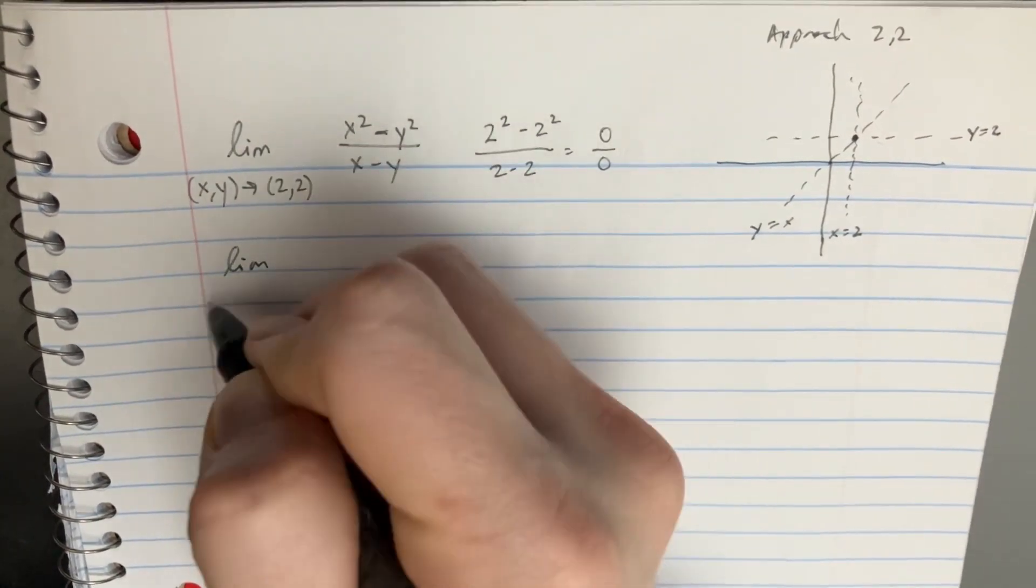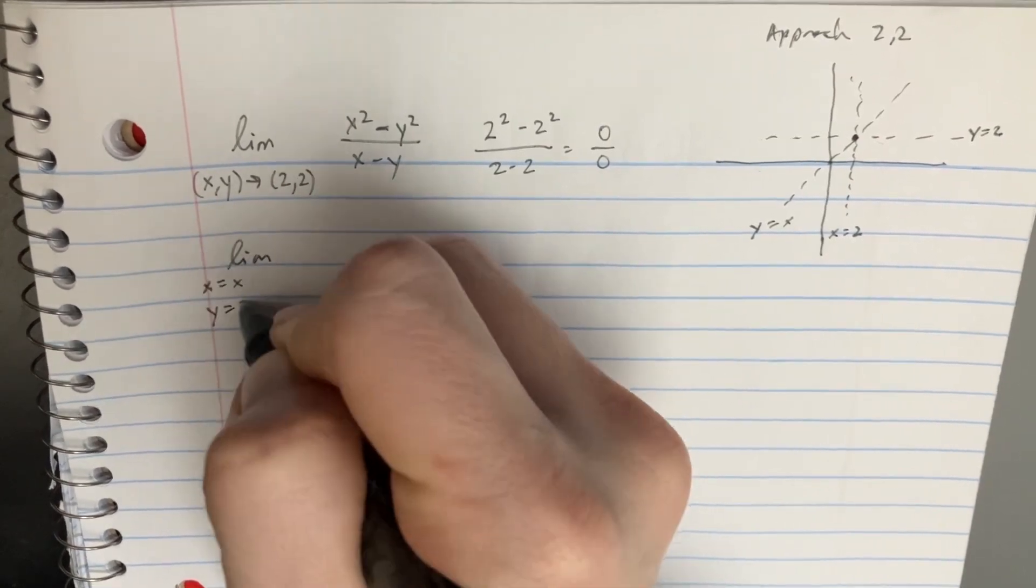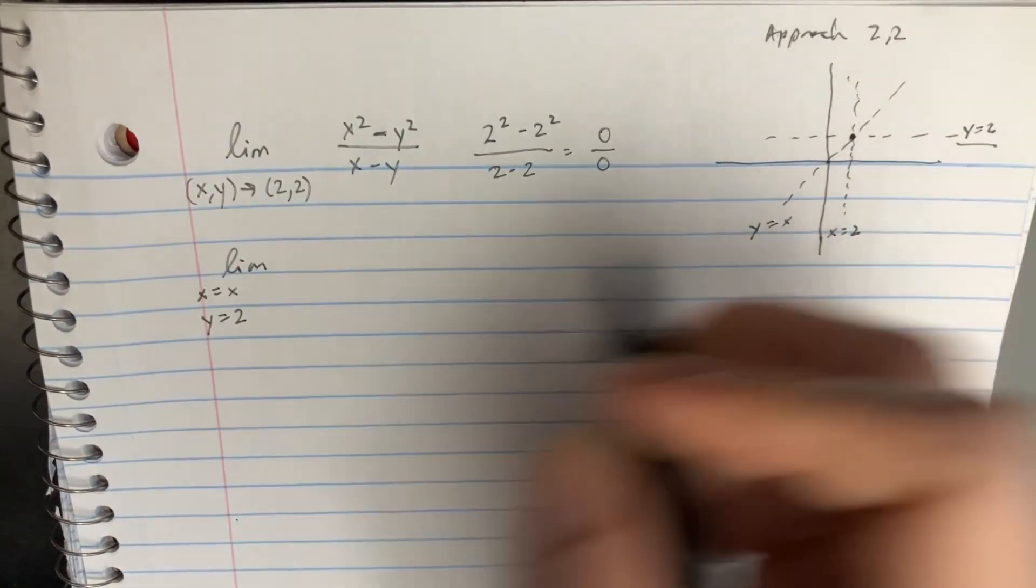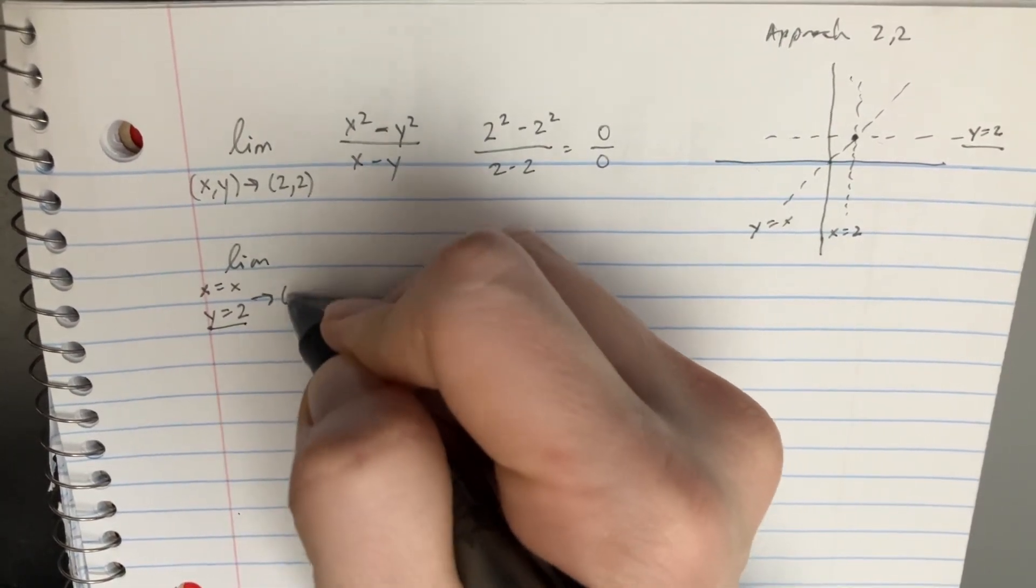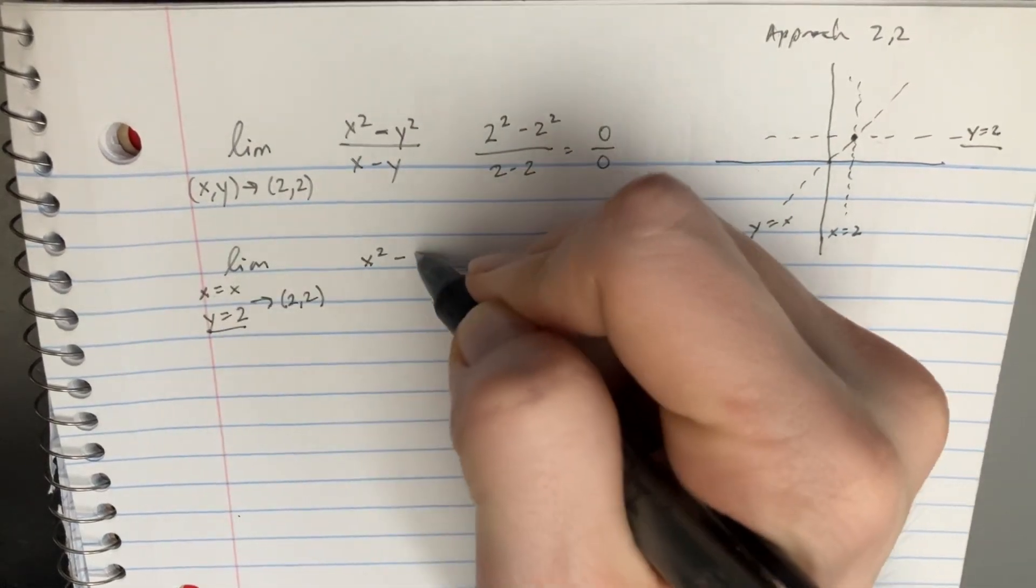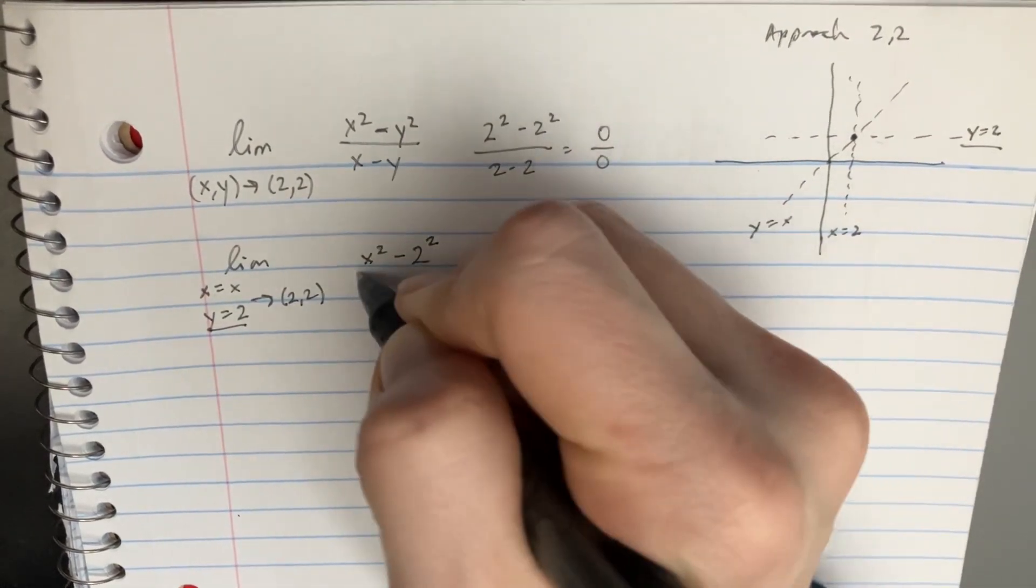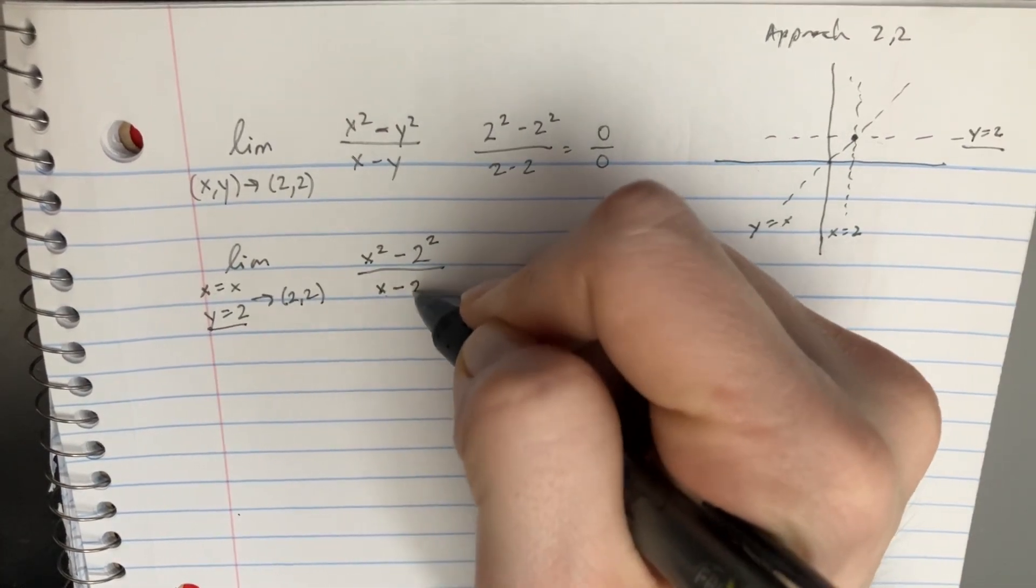So we'll go with the limit, and the first one is going to be x equals x, but y equals 2. That's going to be this one, y equals 2. We're going to put that in there and keep the x the same. We're going to approach that point (2,2), where x equals x and y equals 2.